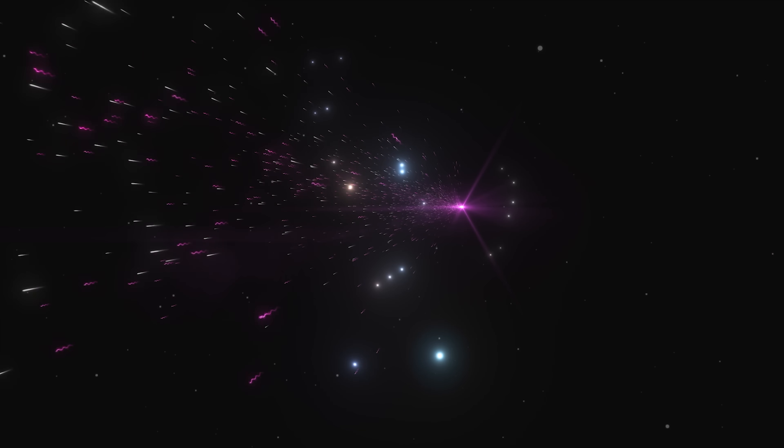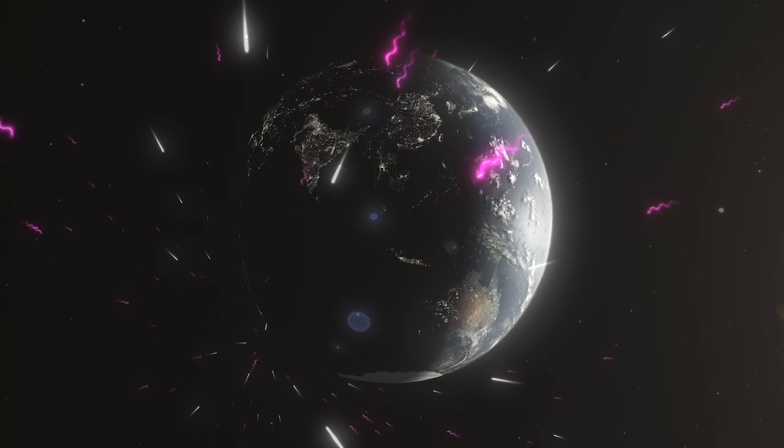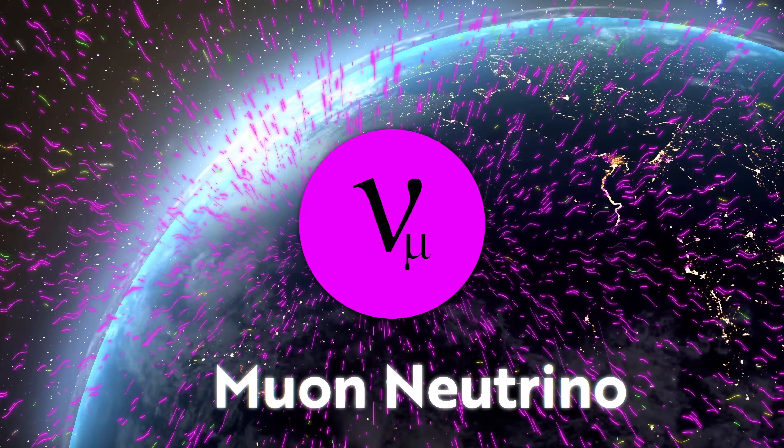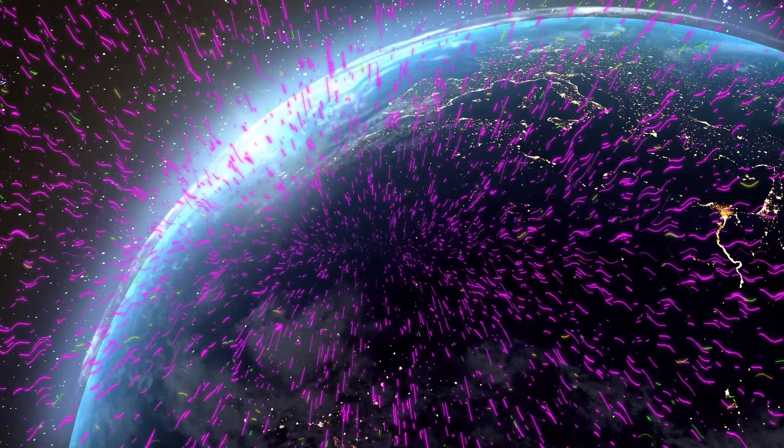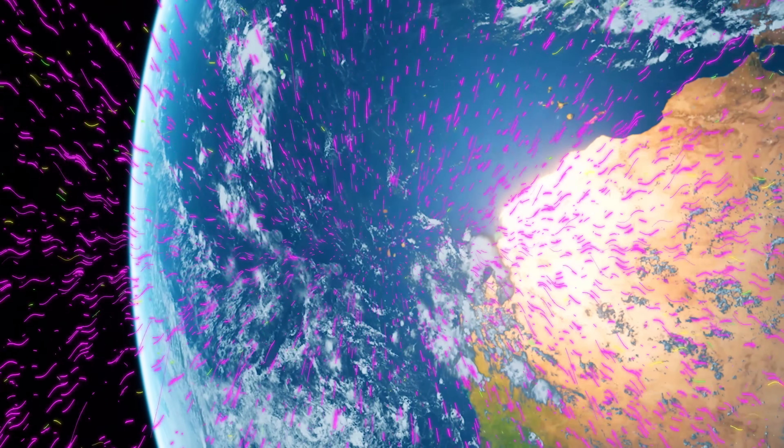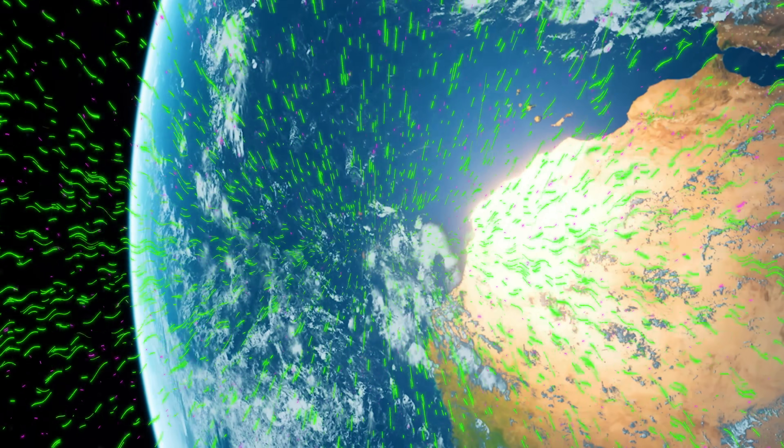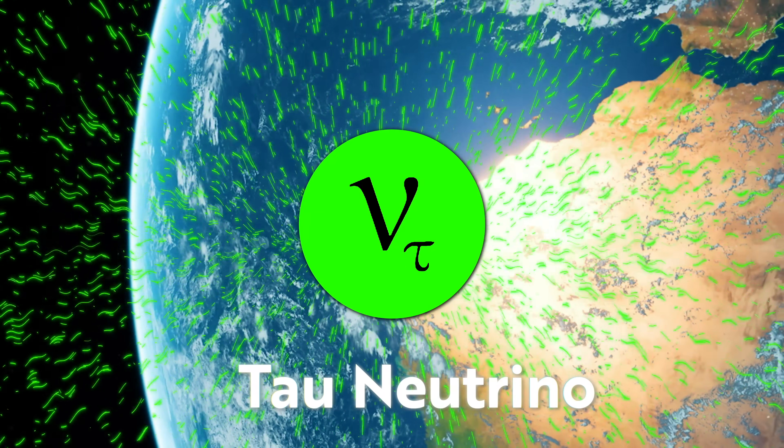When measuring atmospheric neutrinos produced by cosmic rays slamming into the Earth's atmosphere, the Super Kamiokande scientists observed that muon neutrinos coming from the opposite side of the Earth were disappearing slightly more often than expected. This disappearance was consistent with the neutrinos oscillating into another flavor. In this case, likely tau neutrinos, which Super Kamiokande could not easily detect.